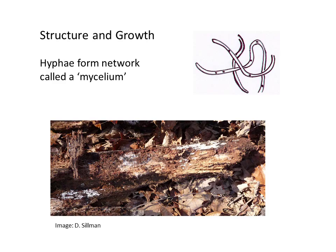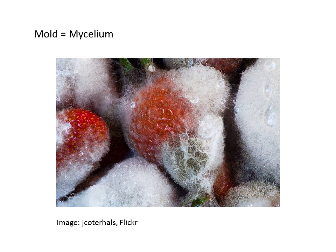These thread-like hyphae form a network called a mycelium. When you poke through a rotting log in the woods and you see the fuzzy white material, that's the fungal mycelium. Here's another view of a fungal mycelium — in this case, the substrate that this particular fungus is growing on is strawberries, and the mycelium undoubtedly permeates into the fruit. What we often refer to as mold is usually a fungal mycelium.